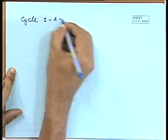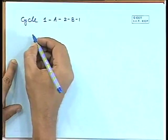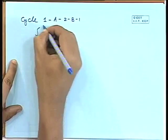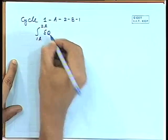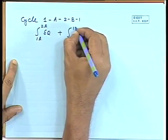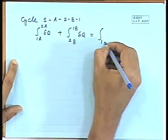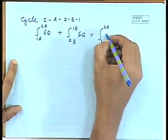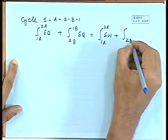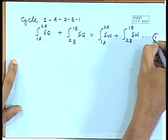For Cycle 1A2B1, applying the first law gives us: integral from 1A to 2A of dQ plus integral from 2B to 1B of dQ equals integral from 1A to 2A of dW plus integral from 2B to 1B of dW. Let us call this Equation 1.